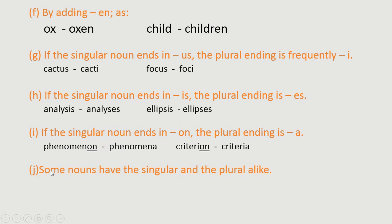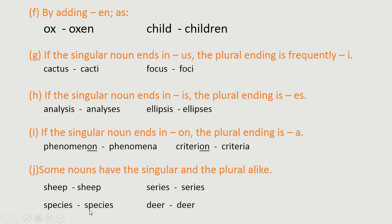Rule J: some nouns have the singular and the plural alike. There are a few nouns whose singular and plural are the same. For example: sheep→sheep, series→series, species→species, deer→deer. Homework: write five examples of such words (same singular and plural) in the comment box with your name.